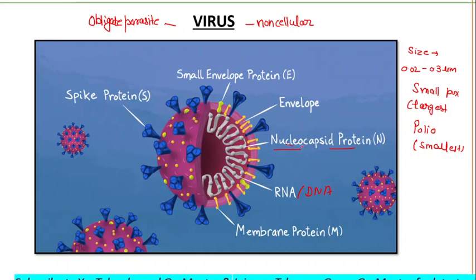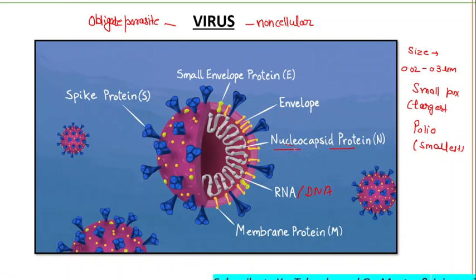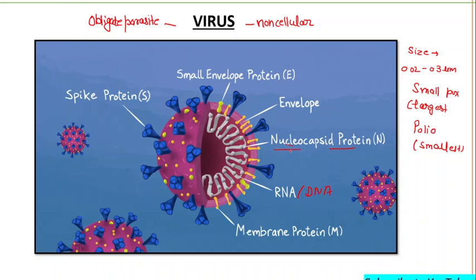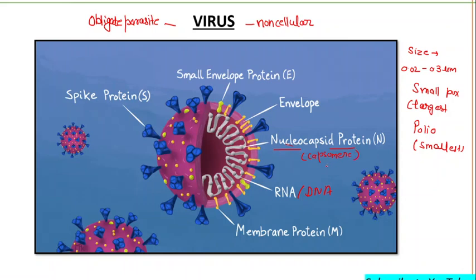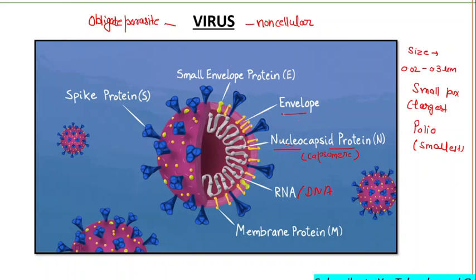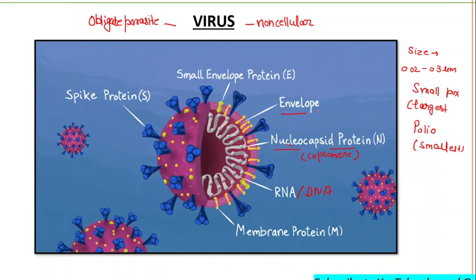Capsids are formed as single or double protein shells and consist of one or a few structural proteins. The protein units used to build the capsid are called capsomeres — capsomere is the unit of the capsid. The nucleic acid together with the capsid forms the nucleocapsid. Some viruses have an envelope and are called enveloped viruses; those without an envelope are called non-enveloped or naked viruses.